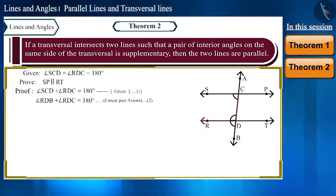So keeping in mind the linear pair axiom, we can say that the sum of these two angles will be 180 degrees. If we write these two like this, then we can say that angle SCD and angle RDB are equal.